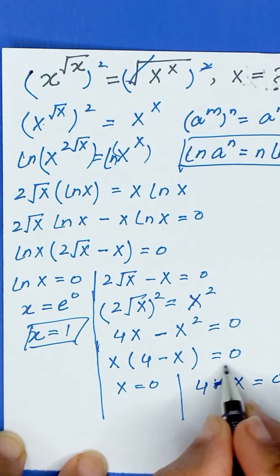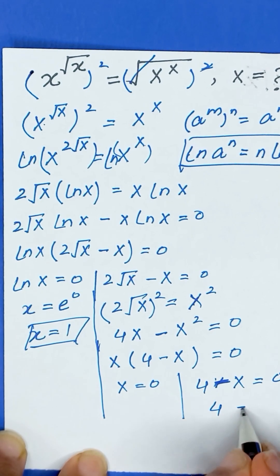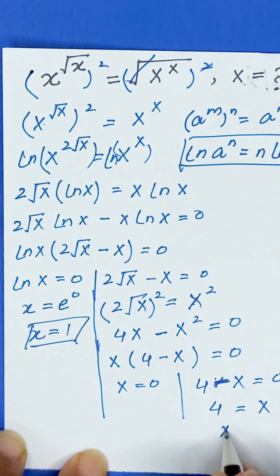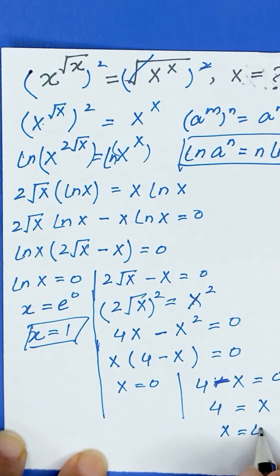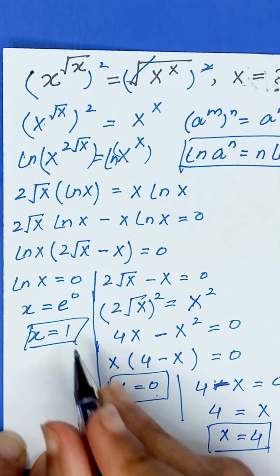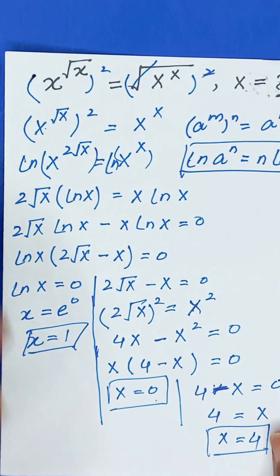Taking x to the right hand side gives 4 equals x, or x equals 4. So the three values of x are 0, 1, and 4. Thanks for watching.